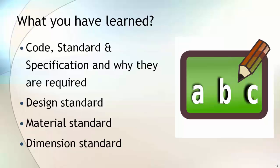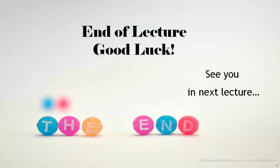Let's summarize what you have learned in this lecture. You learned about code, standard, and specification, and why they are required. You also learned about design standard, material standard, and dimension standard, and what these three categories cover. Refer to the resource section of this lecture to have a look at the applicable codes and standards used in the process industry. See you in the next lecture.